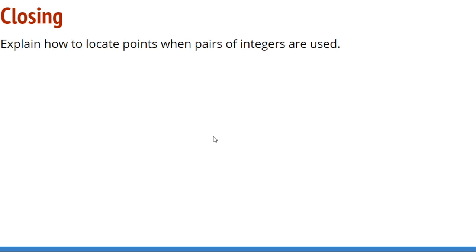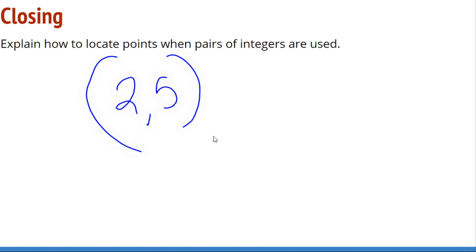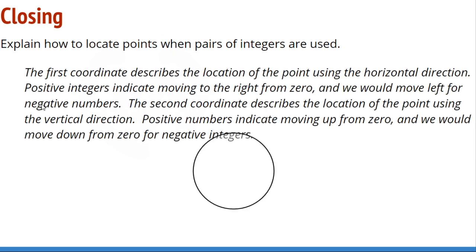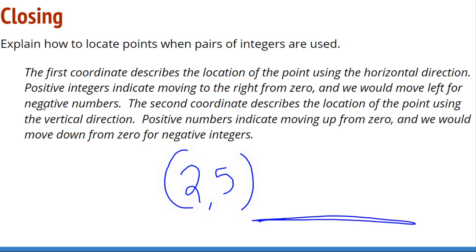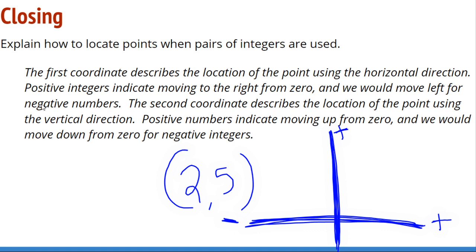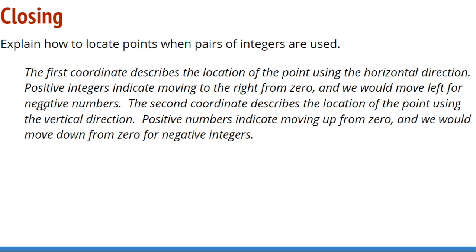Explain how to locate points when pairs of integers are used. The first coordinate describes the location in the horizontal direction — it tells me how far to move left or right. The second coordinate tells me where to go vertically, up or down. Positive first coordinate means moving right; negative means moving left. Positive second coordinate means up; negative means down. Basically we are combining two number lines — a horizontal and a vertical — to find where we are.